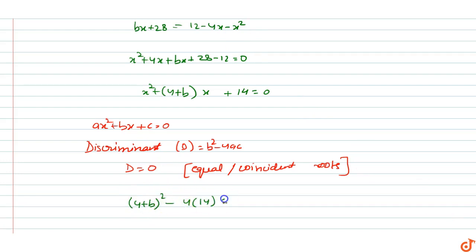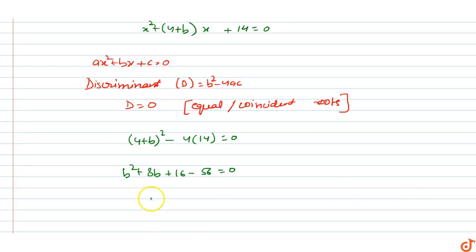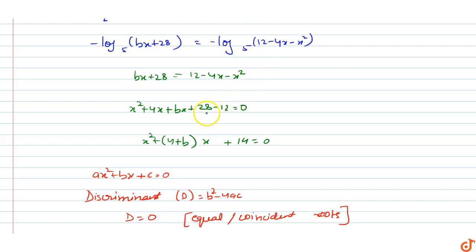Expanding: B squared + 8B + 16 minus 64 equals 0, giving B squared + 8B minus 48 equals 0. Note: 28 minus 12 equals 16, so c = 16 and 4 times 16 equals 64.